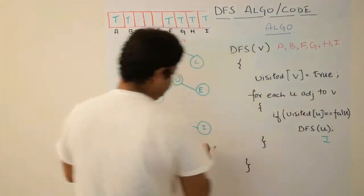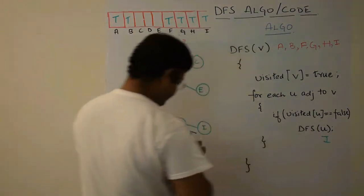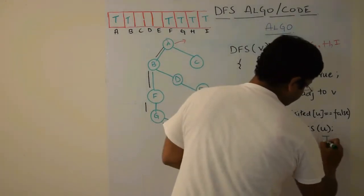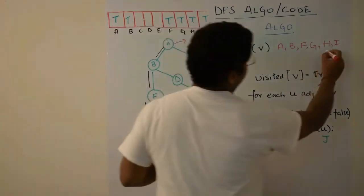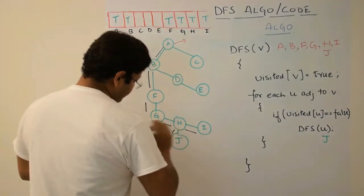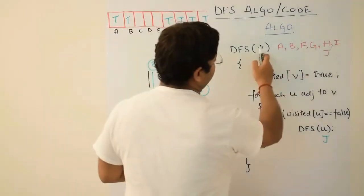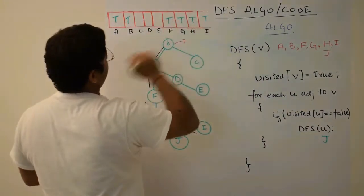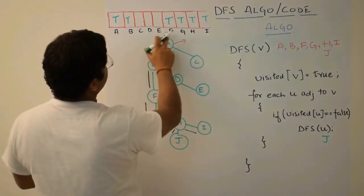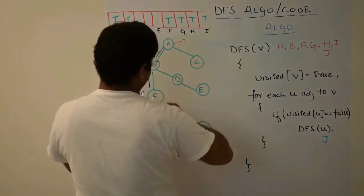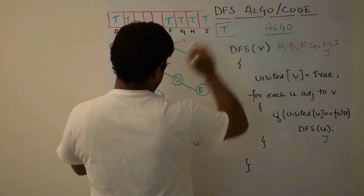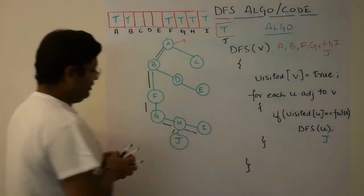Now from H we had two options. I and J. We had passed I. But this time now we will pass J. So we will pass here J. J will come here. Now what? We have reached here. We have passed J. J will be termed as, I think I have not made entry for A, B, C, D, E, F, G, H, I. And let me make entry for J also here. So J is now true.